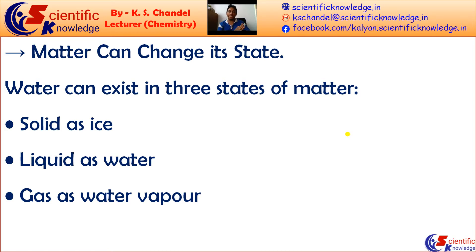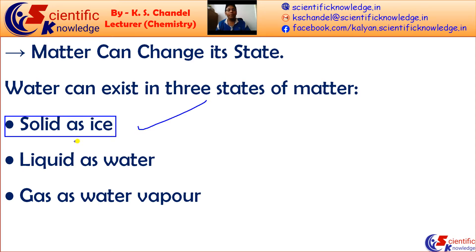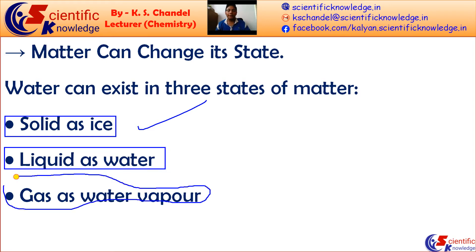Matter can change its state. There are two major factors: first is temperature, second is pressure. For example, water can exist in three states of matter. Ice converts into water when we increase the temperature. Water converts into vapors when we further increase temperature. When we decrease the temperature, vapors convert into liquid, and liquid converts into ice.